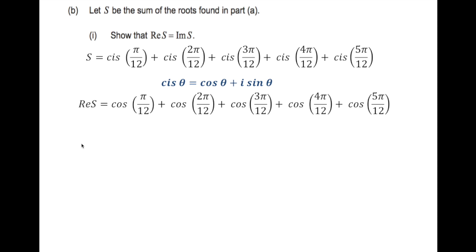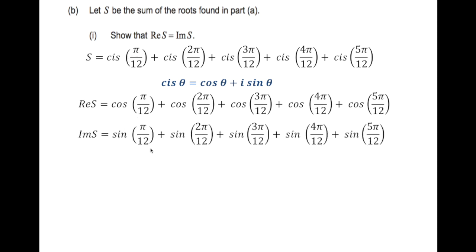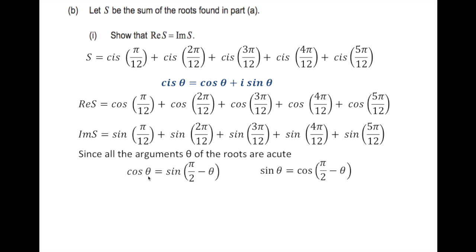The imaginary part is the coefficient of i, so Im(S) = sin(π/12) + sin(2π/12) + sin(3π/12) + sin(4π/12) + sin(5π/12). We need to show Re(S) = Im(S). Since all arguments are less than π/2, they are all acute angles, so we can use the identity cos(θ) = sin(π/2 − θ).